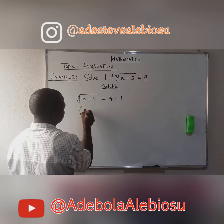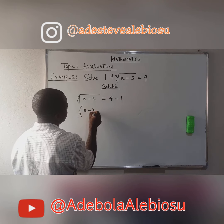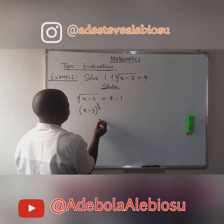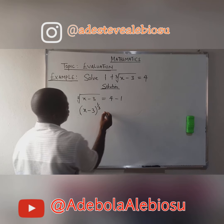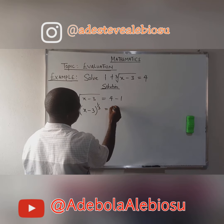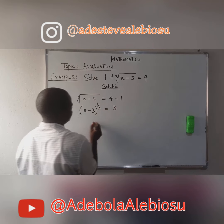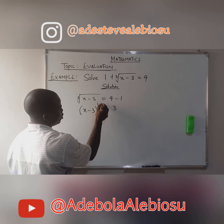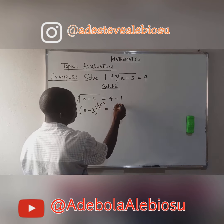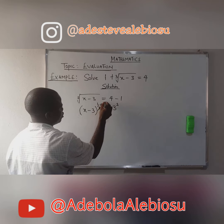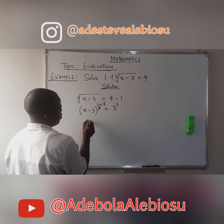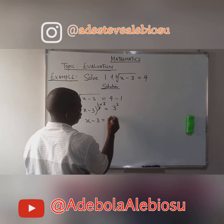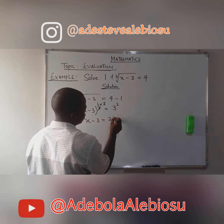Taking the 3 to the other side, x minus 3 is the same thing as x minus 3 to the power of 1 over 3, which equals to 3. Now to remove this 1 over 3, we multiply both sides by 3. So we are left with x minus 3 equals 3 cubed, that's 27.